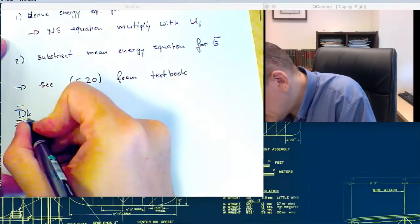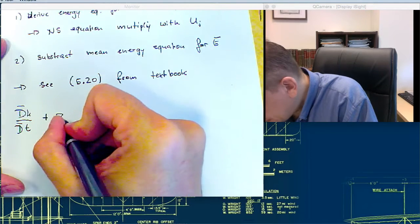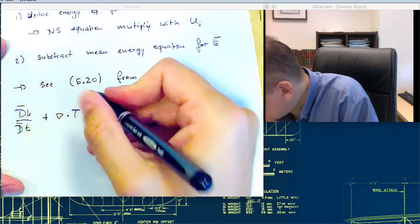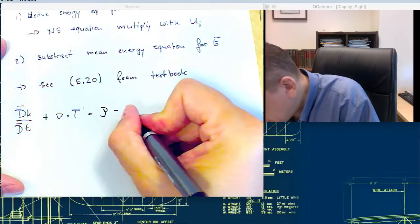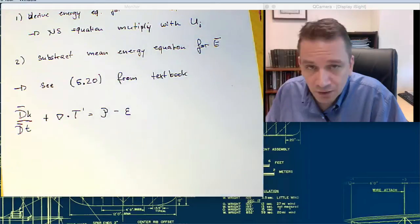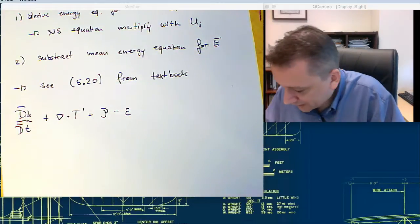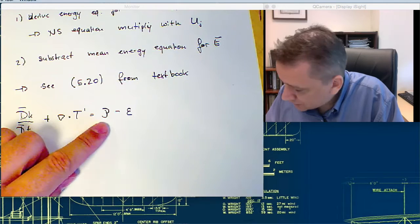dk dt plus nabla scalar T prime is equal P minus epsilon. So it's the same formulation from the textbook. So you have here, again, the total derivative.